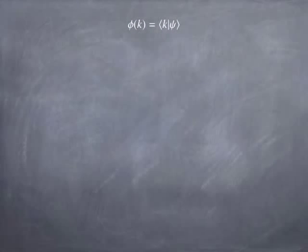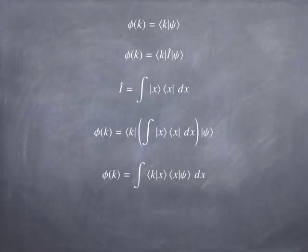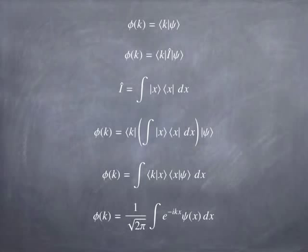We can play the same game with phi of k. Write phi of k as k on psi, then stick the identity in — this time writing the identity not in terms of k basis vectors but as a superposition of x basis vectors. Doing the same trick: I get k on x times x on psi. What is k on x? Whenever you flip the order of the bra and the ket in an inner product, you get the complex conjugate, so that gives 1 over the square root of 2 pi times e to the minus ikx, times psi of x. That is nothing other than the Fourier transform — not the inverse Fourier transform, this is the definition of the Fourier transform. So the Fourier transform and the inverse Fourier transform are really nothing other than a change of basis, defined by sticking the identity into the expression for phi of k or psi of x.